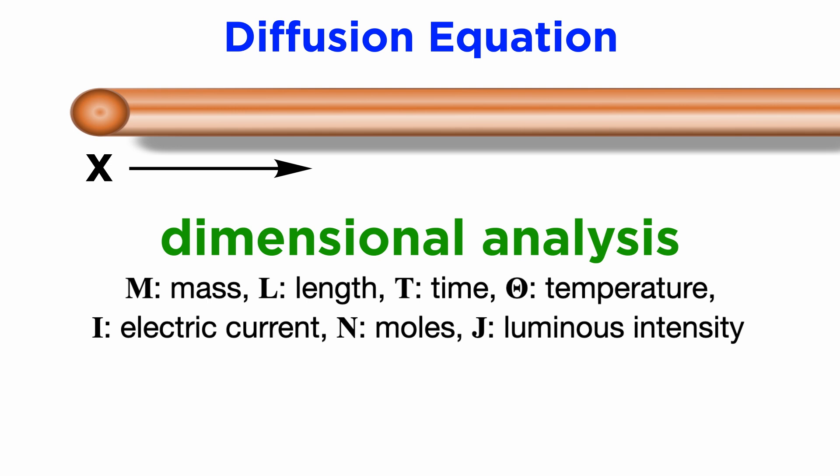We will now use dimensional analysis to identify what x could be. Referring back to our PDE, the term partial u partial t is the rate of change of temperature in time. So this quantity as a whole must have physical units of the form temperature divided by time, such as degrees Celsius per minute, or Kelvin per second.